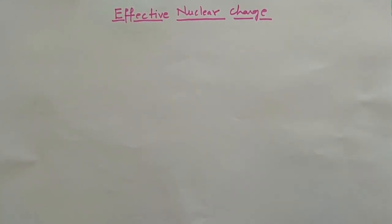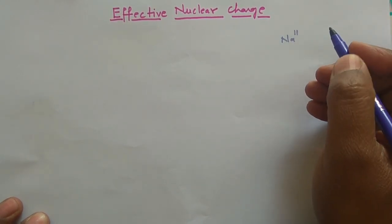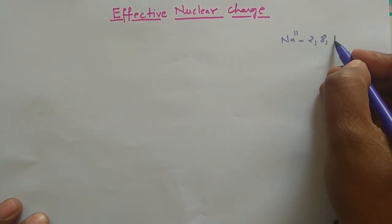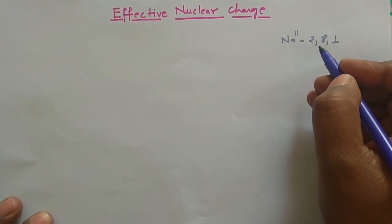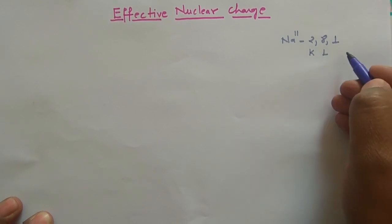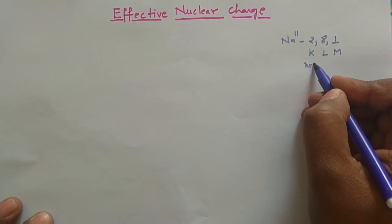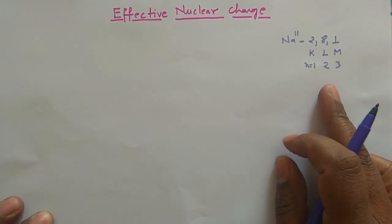Before starting the lecture, you should know why it is necessary to apply the effective nuclear charge concept. For example, take sodium, which has an atomic number of 11. If you write the electronic configuration, it is 2-8-1, corresponding to the K shell, L shell, and M shell, with principal quantum numbers 1, 2, and 3 respectively.